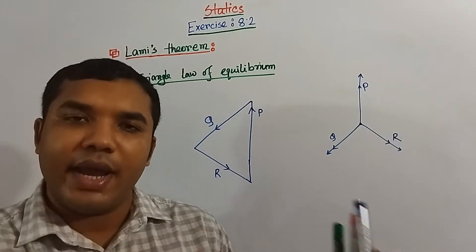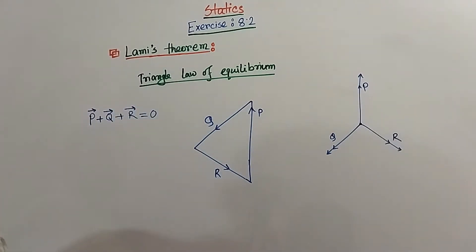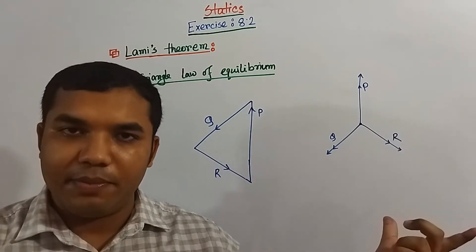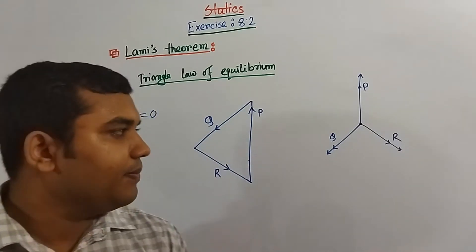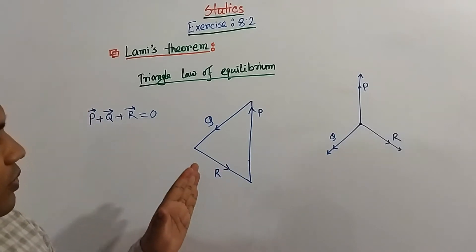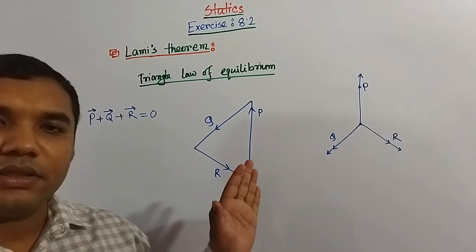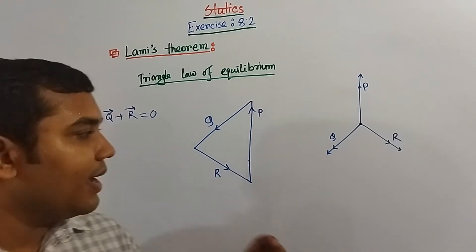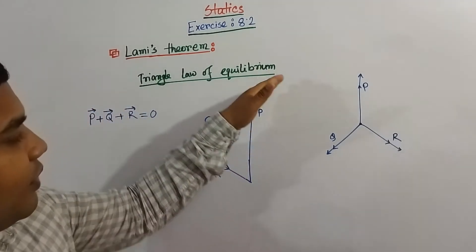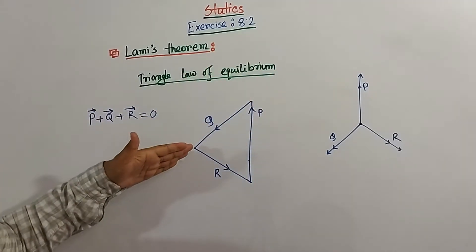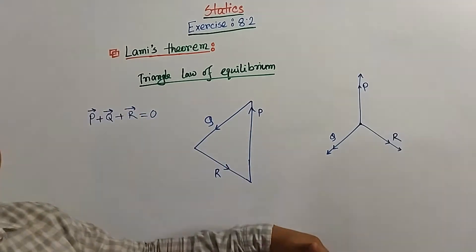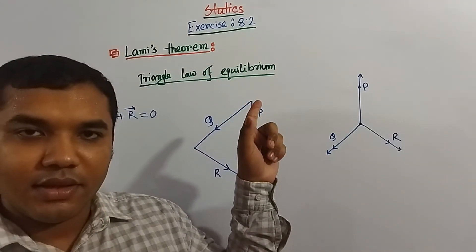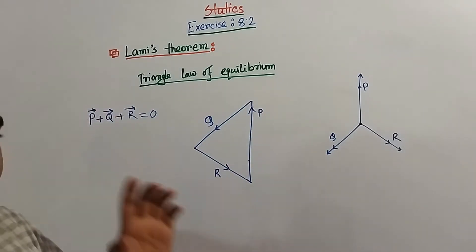We know from the triangle's law that generally two forces' addition should be equal to the third part. We have to understand this triangle very closely — where the direction has been working. Here P force is working this way, Q force has been working this way, and R force has been working that way. The flow is in the same direction, that's why it should be 0.